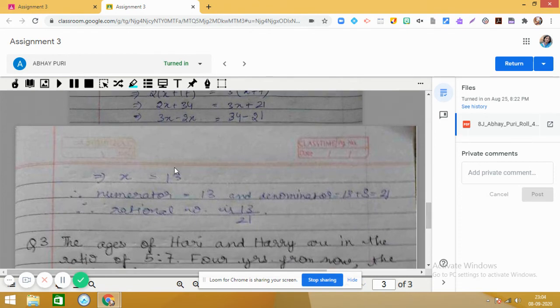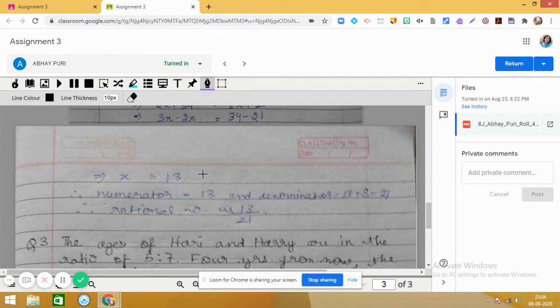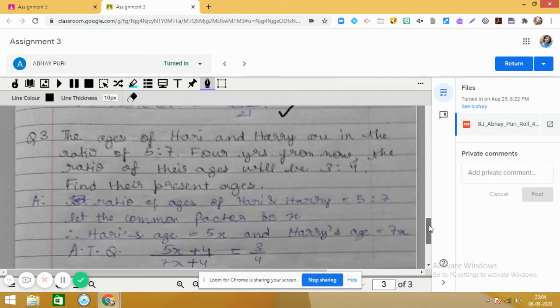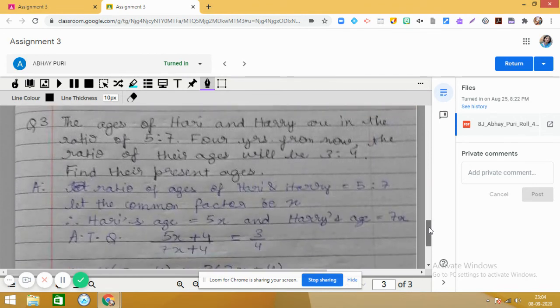8 - 1 is 7. Simplify, we get x = 13. This is also correct. Now we see that the denominator is 8 more than the numerator, so 13 + 8 = 21. So 13/21 is correct answer.